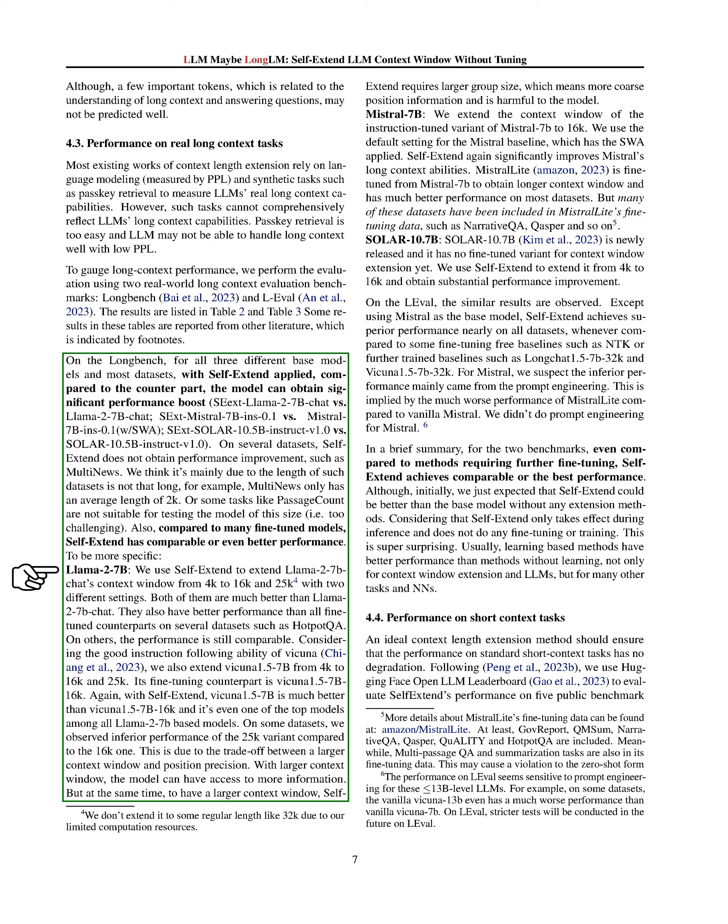We also found that Self-Extend performed comparably or even better than many fine-tuned models. For example, we used Self-Extend to increase the context window of the LLaMA 2-7B chat model from 4,000 to 16,000 and 25,000. Both settings outperformed the original LLaMA 2-7B chat model and all fine-tuned counterparts on several datasets. We also extended the context window of the Vicuna 1.5-7B model from 4,000 to 16,000 and 25,000, and the extended model performed much better than its fine-tuned counterpart, ranking among the top-performing models for LLaMA 2-7B-based models. However, the 25,000 variant performed worse than the 16,000 variant on some datasets, likely due to the trade-off between a larger context window and maintaining position precision.